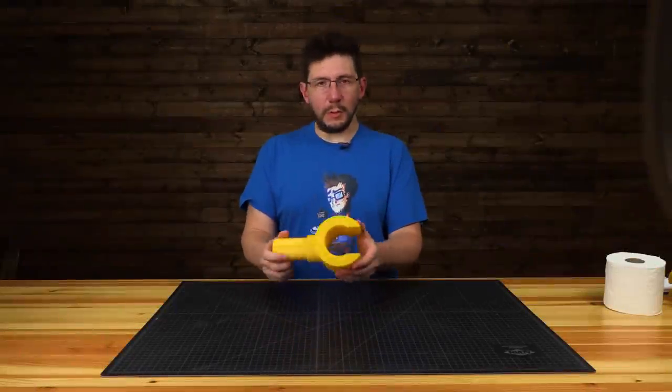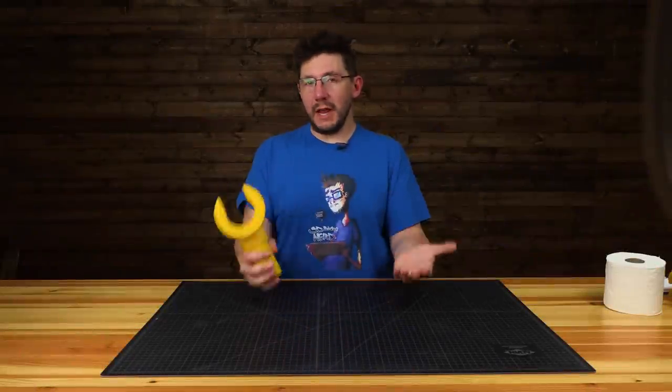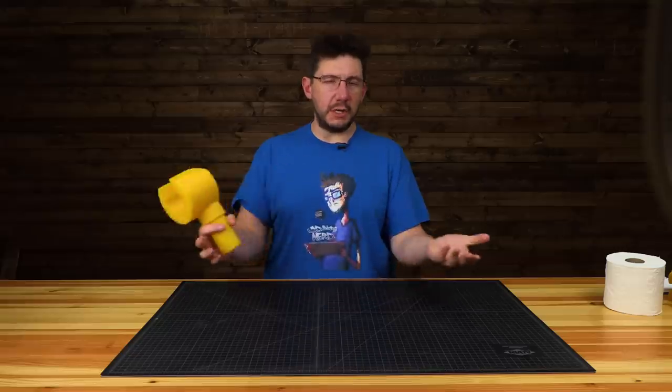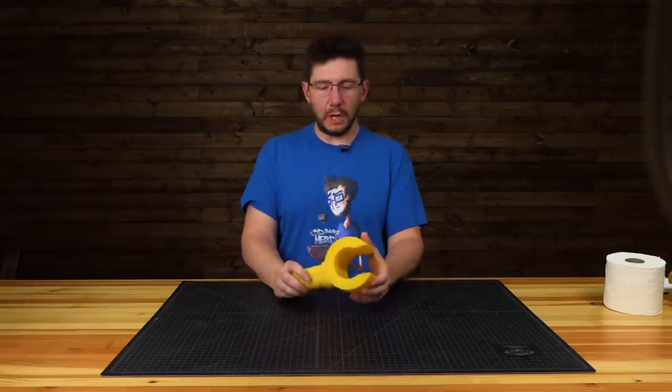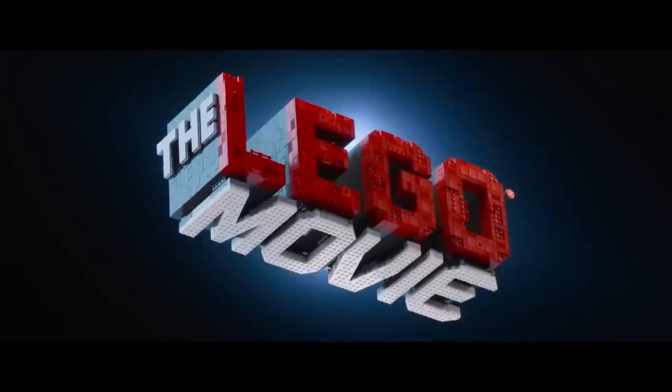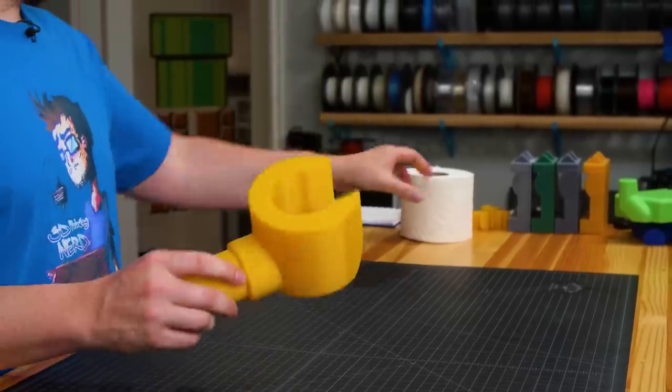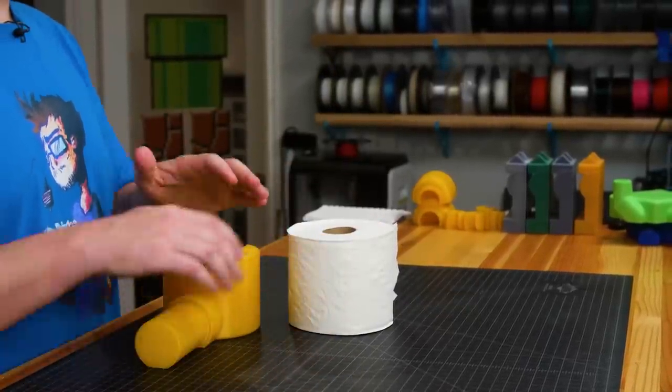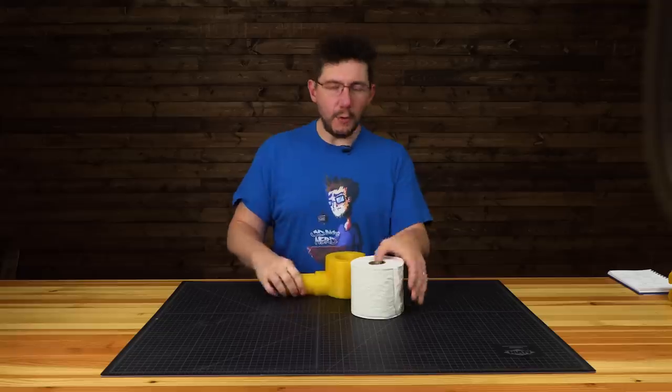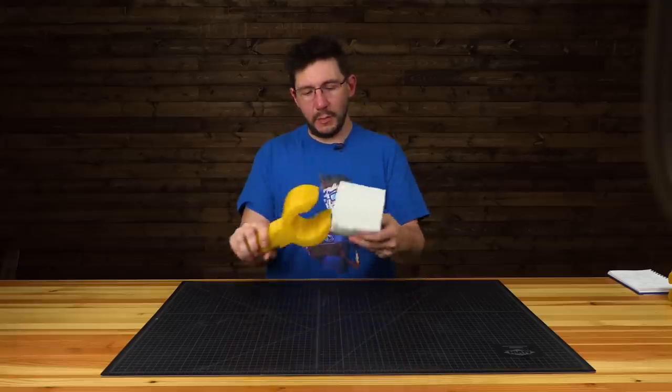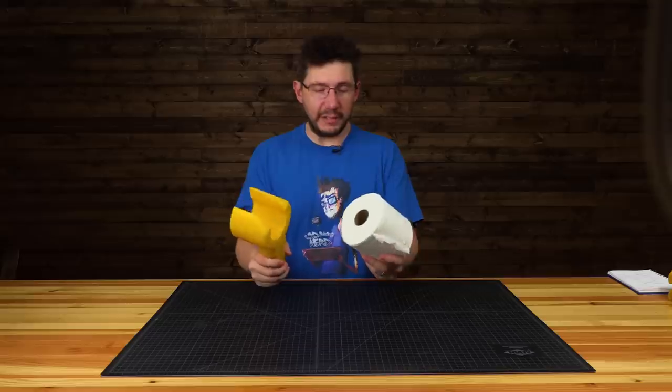Lego, it's what we all played with as kids, it's what we all play with now, and it's been the subject of many successful Hollywood blockbuster movies. This is quite a large Lego hand. This is toilet paper, it's what we wipe our butts with when we go poop. How do you combine Lego and toilet paper in a way that would be awesome?